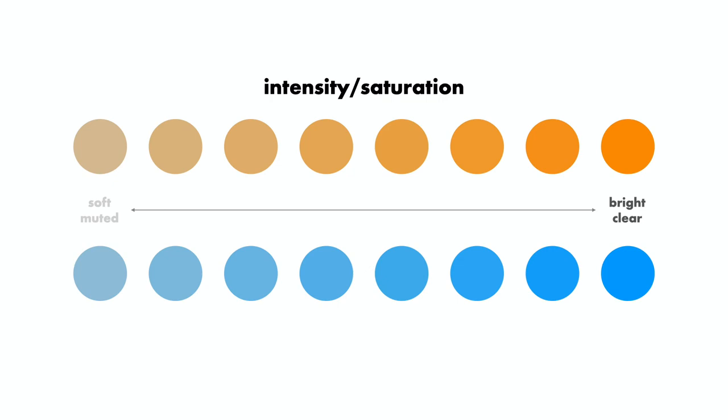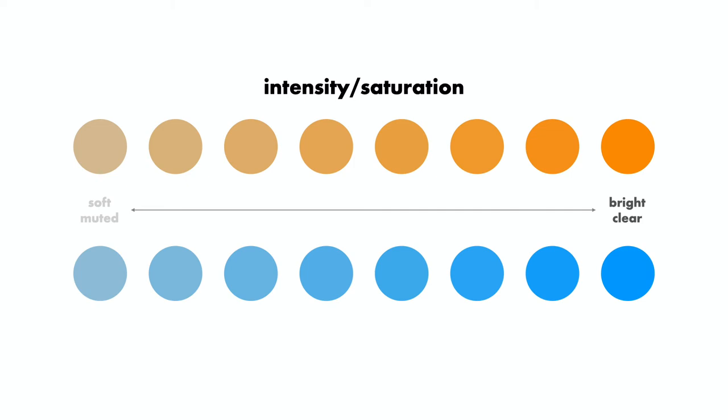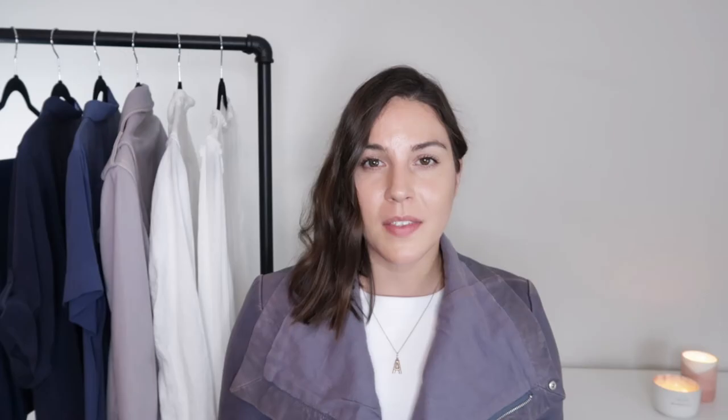So in summary: your undertone determines which hues will look best on you, whether they be warm or cool. Intensity determines the saturation of those colors, whether highly saturated or more muted. Value determines the lightness or darkness of the color. And contrast informs the value and intensity of the colors you choose, whether they differ from your overall coloring or blend in. Now I'd like to show you how you can use these concepts to choose flattering makeup every time, even when you're shopping online.